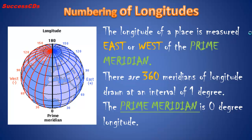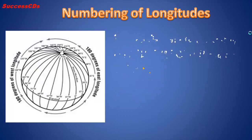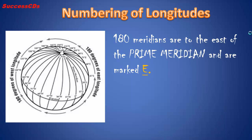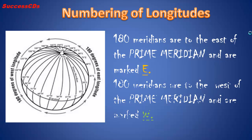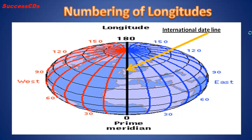The prime meridian is 0 degrees longitude. 180 meridians are to the east of the prime meridian and are marked with a capital E. The 180 degrees east and 180 degrees west is the same line and is also referred to as the international date line.